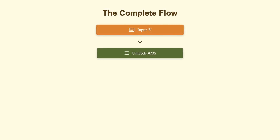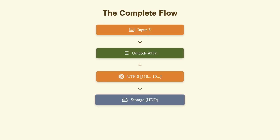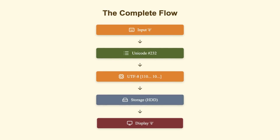Here's the complete flow: you type a character. Unicode says 'that's character 232.' UTF-8 says 'I'll store 232 using 2 bytes.' The computer saves those bytes. Later, UTF-8 reads those bytes and tells Unicode 'this is 232.' Unicode says 'that's À.' You see À on your screen.